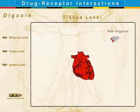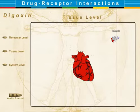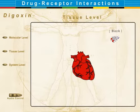Here we see the action of digoxin on the weak rapid heart rate characteristic of CHF. There is an increased strength of contraction — positive inotropy — thereby increasing stroke volume.